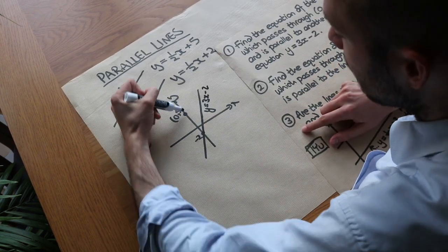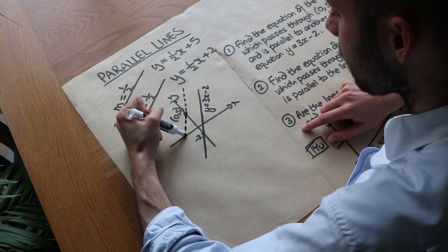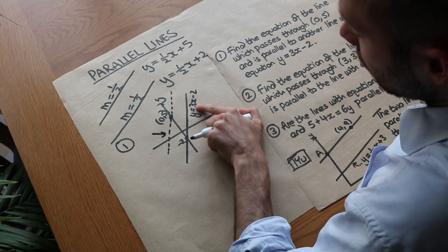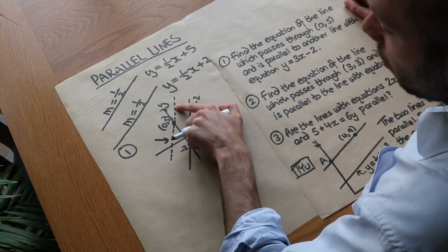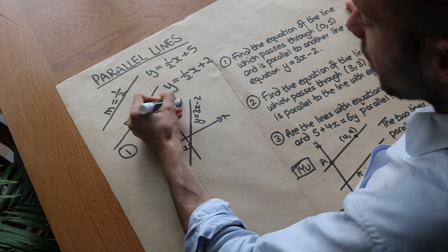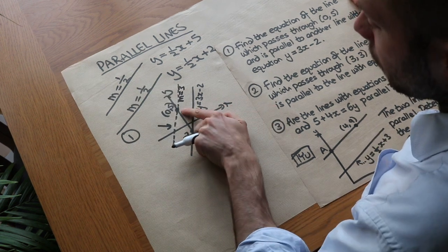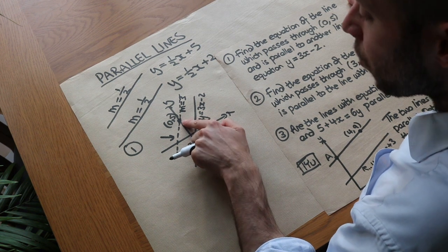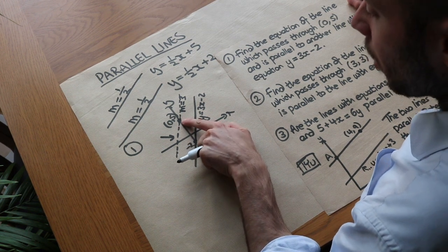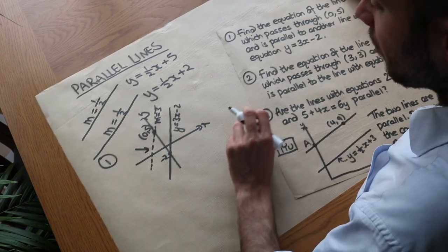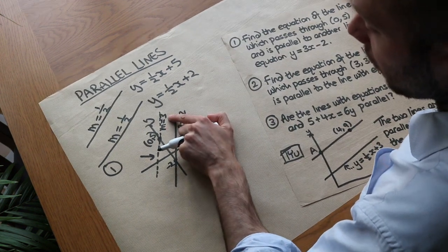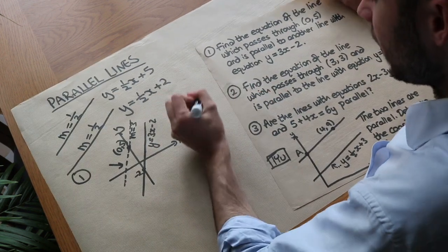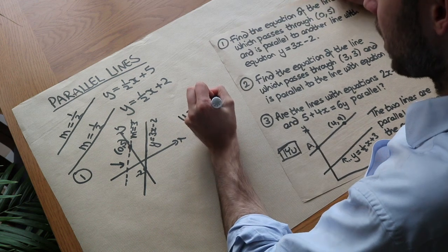So that's y equals 3x minus 2, and we want to find the equation of this parallel line. If the gradient of that line is 3, then we know the gradient of our line must also be 3. And because it goes through (0, 5), that is the y-intercept — it cuts the y-axis at a y-value of 5. So we have everything we need: m equals 3, c equals 5, and the equation is y equals 3x plus 5.